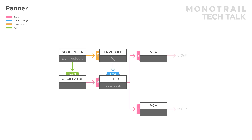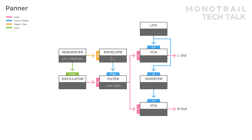If you use one for the left and one for the right output, you created a stereo signal. To create movement, modulate one VCA with something like an LFO directly, and send a copy of that signal to an inverter before modulating the second VCA. Now, when one VCA opens, the other closes and the other way around.